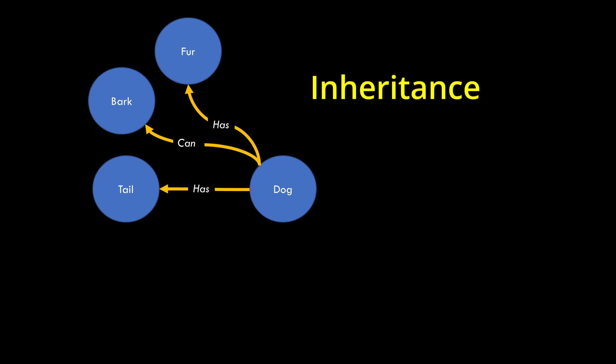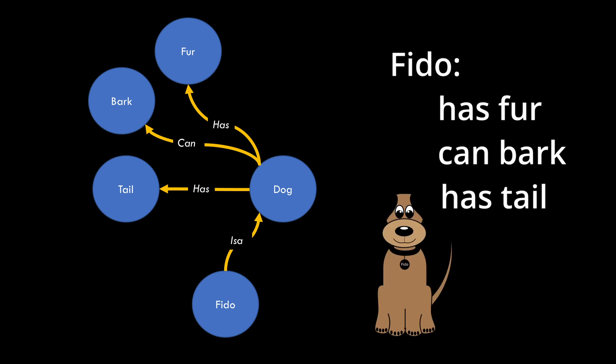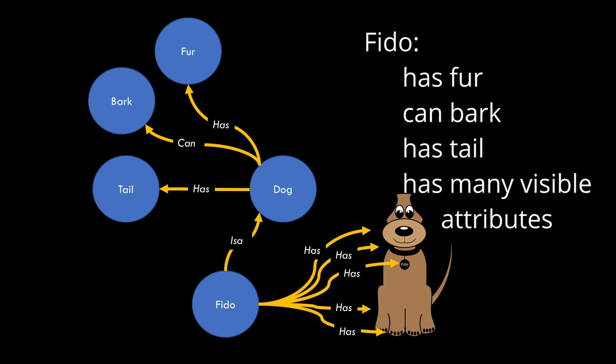When the system is told Fido is a dog, it creates a new node representing Fido, and adds the ISA relationship to the dog node. This allows Fido to inherit all the attributes of being a dog. Your mind does this too. You already formed a mental image of Fido based only on the statement Fido is a dog. If you subsequently see a picture of Fido, your mind can add relationships specific to Fido.